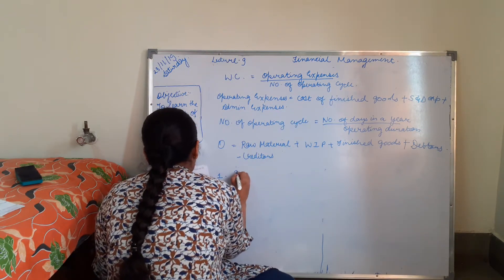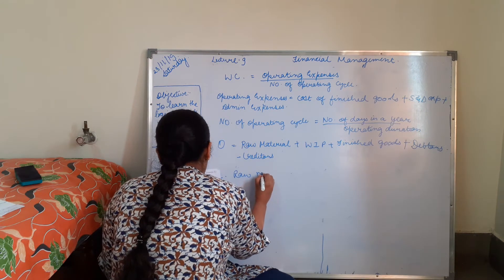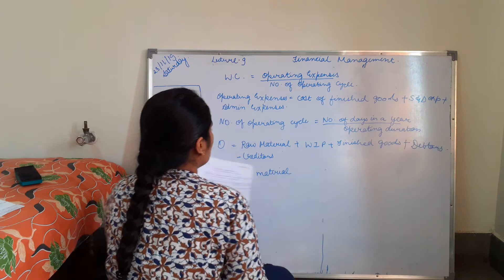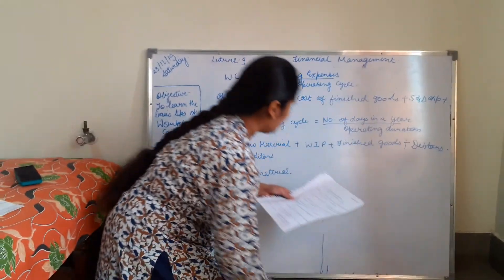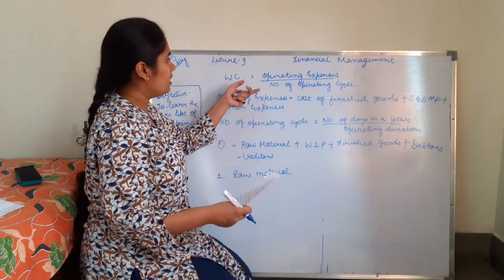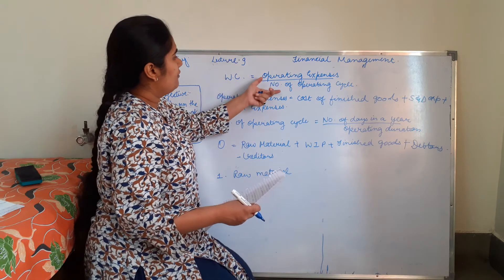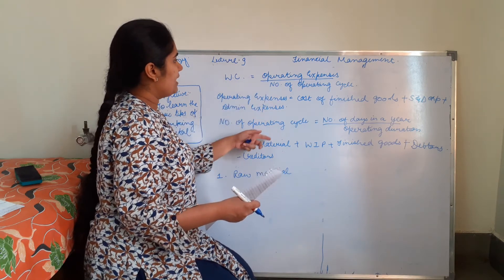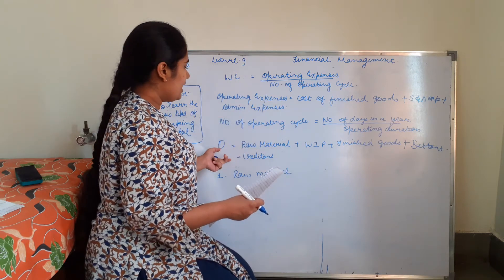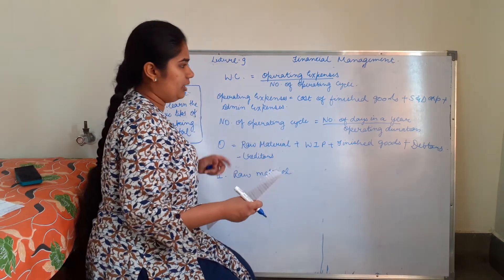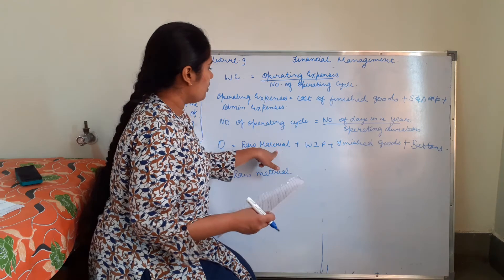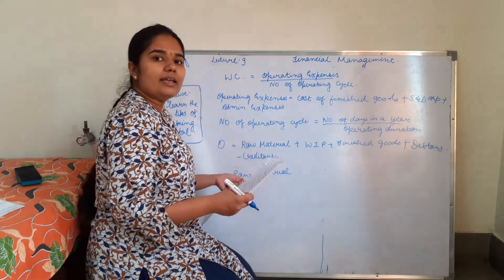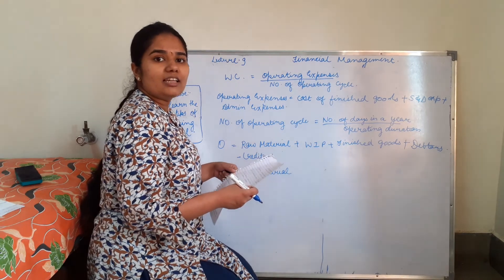We will discuss raw materials in the next lecture. So let us finish this lecture with working capital and its formula, operating expenses and its formula, number of operating cycles and its formula, and operating duration formula. We will discuss how to calculate raw materials, work in progress, finished goods, debtors, and creditors in our next lecture. Thank you for attending the lecture — please like, subscribe, and share the video and press the bell icon.